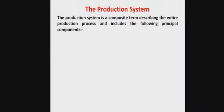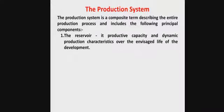What is the production system? It is a composite term describing the entire production process and includes the following principal components. The first is the reservoir — its productive capacity and dynamic production characteristics over the envisaged life of the development.